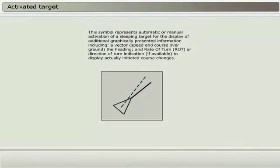This symbol represents automatic or manual activation of a sleeping target for the display of additional graphically presented information, including a vector, speed and course over ground, the heading and rate of turn (ROT), or direction of turn indication if available, to display actually initiated course changes.